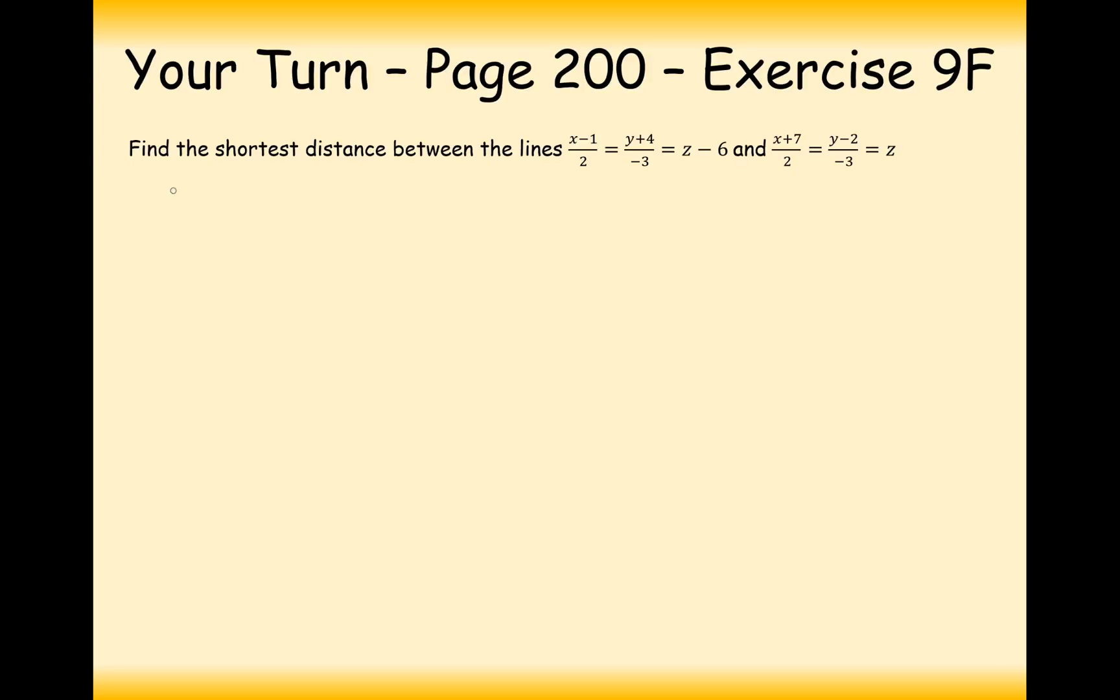All right then, so I think because these have been given to us in Cartesian form, I'd much rather write them as a vector form. So the first vector here is going to be 1, minus 4, 6, add lambda lots of 2, minus 3. Now there's nothing on the bottom of this fraction here, so we can effectively say it's over 1. And the second equation of the line here is going to be minus 7, 2, 0, add mu lots of 2, minus 3, 1.